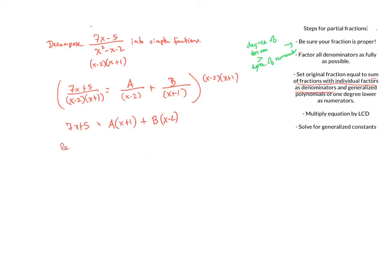I want this statement to be true for all values of x, so I'll choose convenient values that make it easy to solve for A and B. I'll let x equal negative 1. When x is negative 1, the A term goes away and I'm left with the B terms. Plugging in: negative 7 plus 5 is negative 2, and the right side gives B times negative 3. So B equals 2/3.